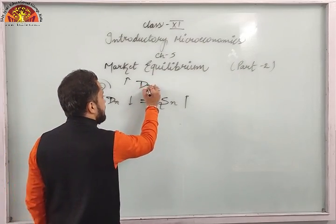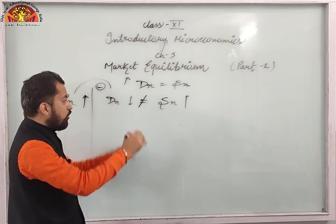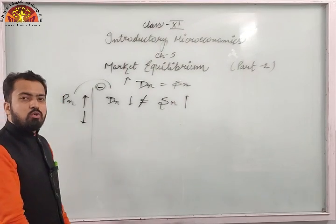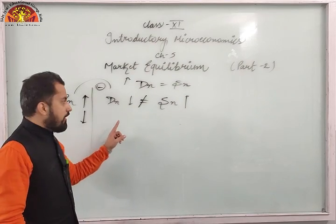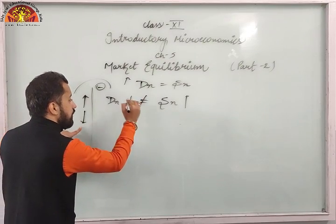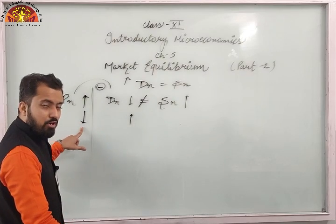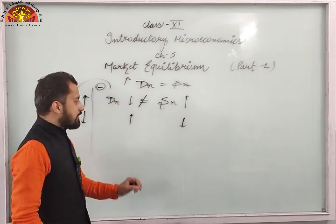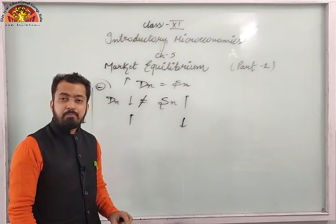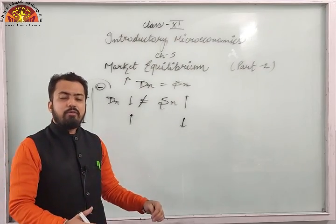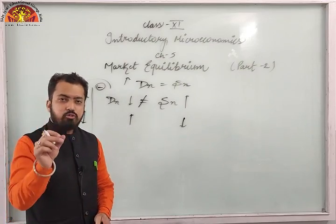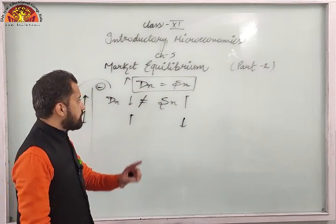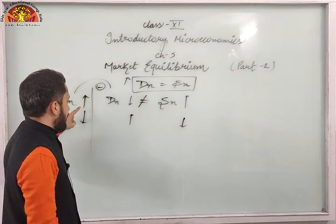We need DX to equal SX. They are not equal only due to the change in price — price is increasing. So if we reduce the product's price, demand will automatically increase. And the effect on supply will be that supply will also decrease. We need to reduce the price until DX equals SX again — that is, until we regain market equilibrium.